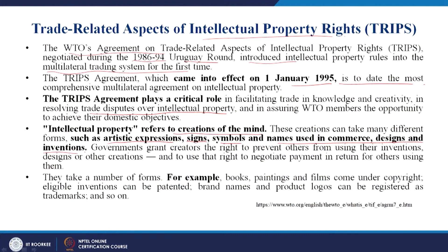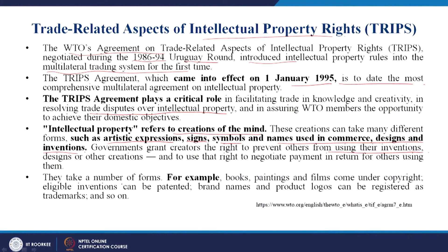Governments grant creators the right to prevent others from using their inventions. For example, a pharmaceutical company may take years to make a drug and invest billions of rupees — if that R&D output is not protected, the company loses very heavily. Books, paintings, and films come under copyright. Eligible inventions can be patented, and brand names and product logos can be registered as trademarks.